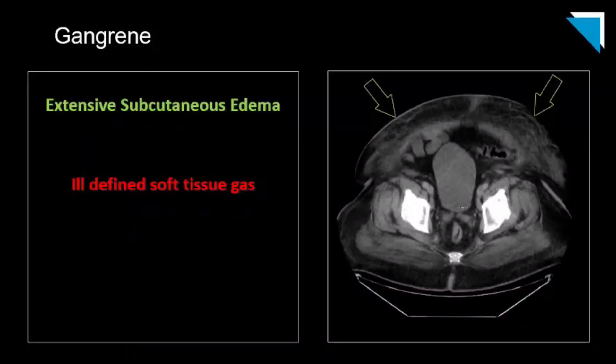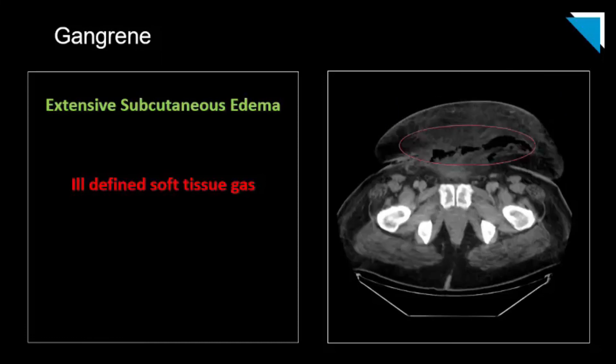On this contrast-enhanced CT scan, we see extensive soft tissue and skin thickening with subcutaneous edema in the ventral abdomen. More caudally, we see ill-defined gas in the subcutaneous soft tissues, compatible with gas gangrene. Here the perineum was not involved — just a reminder that gas gangrene can happen anywhere.